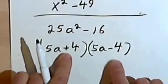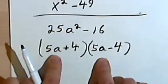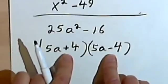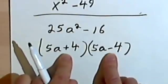5a plus 4, 5a minus 4. Notice the pattern of the answers. You've got basically two identical answers, two identical binomials, except that you've got a positive sign of one and a negative sign of the other.